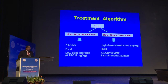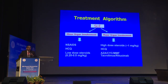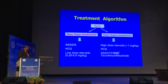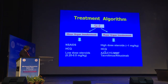For minor organ involvement, use anti-inflammatory drugs. Hydroxychloroquine is the anchor drug — as Professor Malvi has said, what metformin is to diabetes, hydroxychloroquine is to lupus. If you need corticosteroids, relatively lower dosages suffice for minor involvement, around prednisolone 0.25 to 5 mg/kg. For major organ involvement like active kidney disease, corticosteroid dosages are higher and you often need mycophenolate, cyclophosphamide, azathioprine, tacrolimus, or rituximab.